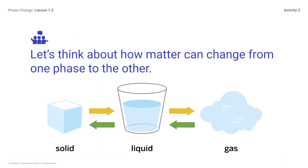Let's think about how matter can change from one phase to another. How do you see a solid change phase in one of the videos? Do you know the word scientists use to describe the change from a solid to a liquid? A solid changes into a liquid — it's called melting. The three other changes include melting, freezing, evaporating, and condensing. How did you see these changes happen in the videos?